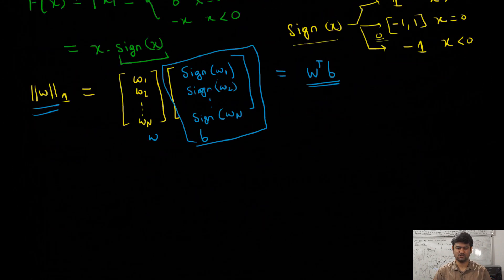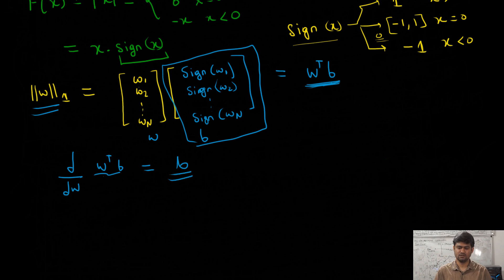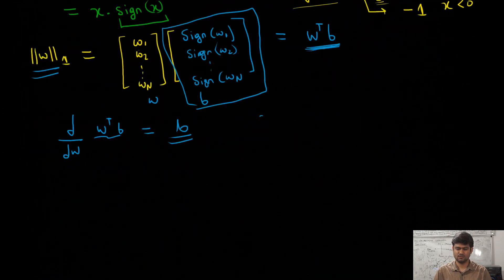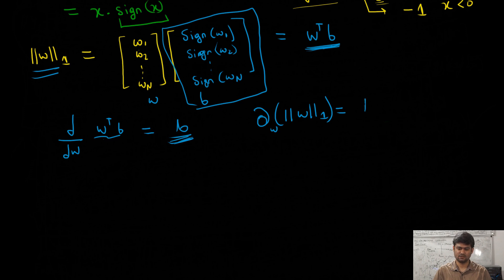We can take the gradient (or subgradient) of this reformulated term w^T b with respect to W. As seen before, the gradient of w^T b with respect to W is simply the vector b. Therefore, the subgradient of the L1 norm of W with respect to W is simply vector b, whose i-th component is sign of the i-th component of vector W.